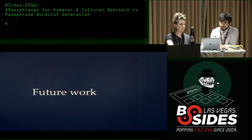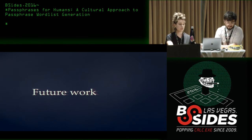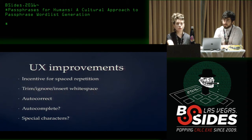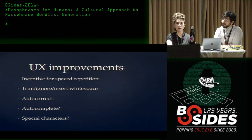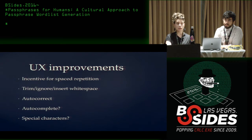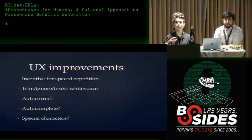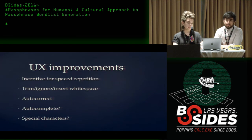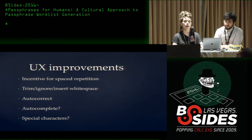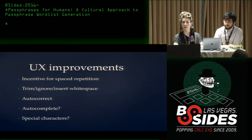For future work in our development pipeline: some user interface and experience tweaks. We want to provide incentives for spaced repetition — Authy prompts you to enter your passphrase periodically, but it's a bit infuriating. We figure we can add some spice by showing a cute animation and maybe offering rewards like more storage space. We can also do some stuff around trimming and ignoring white space, so if you get spaces wrong we correct for that. We're also interested in the autocorrect and autocomplete work that Jovanović has been doing — we might dip our toes into that.